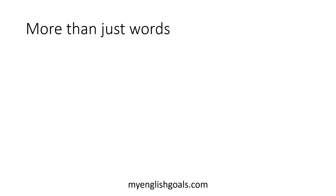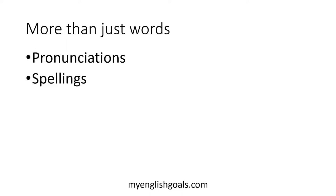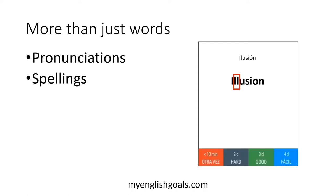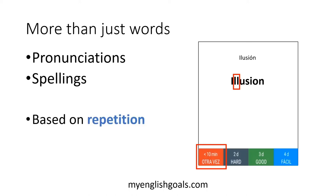Pero vas a aprender más que solo el significado de la palabra en este curso. Vas a aprender también la pronunciación y cómo se escribe la palabra. Cuando estás repasando las palabras, si por ejemplo con la palabra ilusión no te acuerdas que en inglés lleva dos L's, dale a este botón para repetirlo. Repítelo hasta que recuerdes. Lo mismo con la pronunciación — si dices illusion en vez de illusion, repítelo hasta que lo pronuncies igual a la voz que escuchas. Así funciona este método, con repetición. It's based on repetition. Repite, repite, y habrán palabras que tendrás que repetir 30 o 50 veces hasta que los recuerdes bien. Pero te prometo que si sigues repitiendo, lograrás aprender y recordar esas palabras bien.